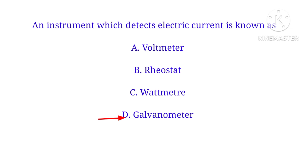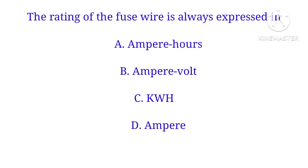An instrument which detects electric current is a galvanometer. A voltmeter is used to represent voltage. A rheostat is used for variation of resistance. A wattmeter is used to measure power.